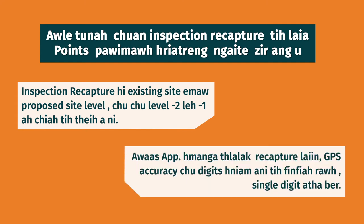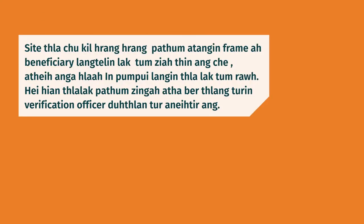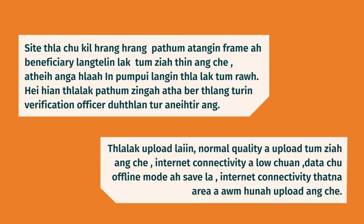Key points: Inspection recapture covers existing site and proposed site levels — level minus one and level minus two. In the Avas app, for recapture, GPS accuracy must be a single digit. The site photo quality must be clear for upload. If the beneficiary's details are incorrect, re-verification will be needed. If the photo quality is poor at upload, it should be re-taken. If there is no internet connectivity, data can be saved offline and uploaded when connectivity is available.